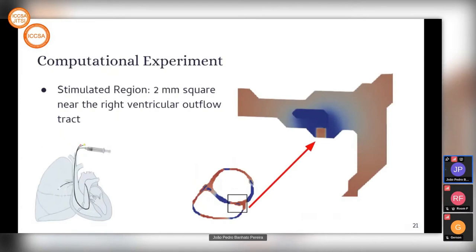During the computational experiment, our simulated region was a 2mm square because we wanted to simulate the use of a catheter. We applied the stimulus near the right ventricular outflow tract because it's the most pro-arrhythmic location. The electrical conductivity is considered isotropic, meaning the electrical pulse is transferred evenly in all directions. The conductivity is heterogeneous, meaning areas with fibrosis have reduced conductivity.